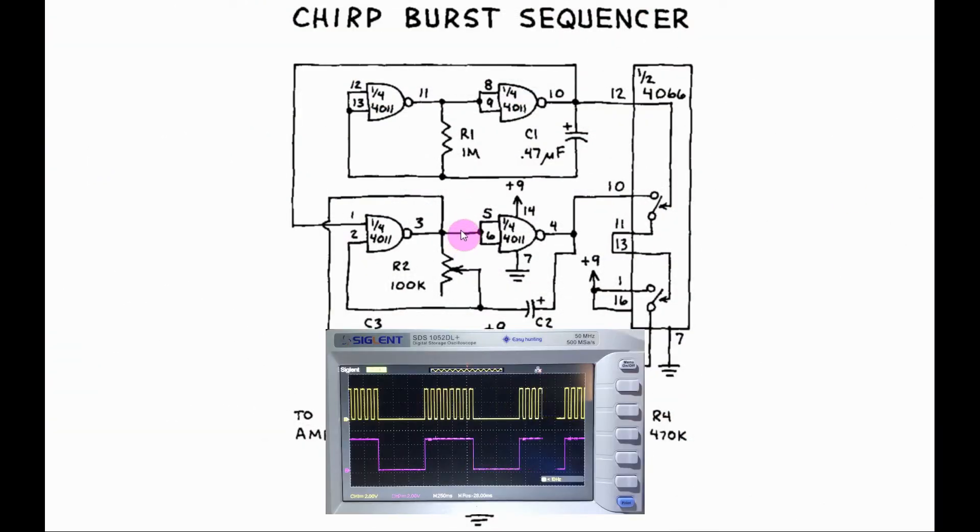Referring to the oscilloscope, we note that for each logic 1 pulse for this generator, we have several pulses for the second generator. And we can increase the frequency of the pulses by increasing the pot value here.